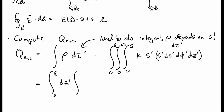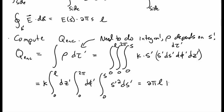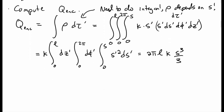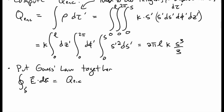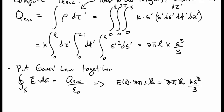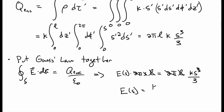These are three separate integrals — over z, over phi, and over s — with k out in front. The integrals are straightforward to do, giving us 2πLks³/3 for the charge enclosed. Now we put Gauss's law together: the flux must equal charge enclosed over epsilon-naught. So E times 2πsL equals 2πLks³/3. The 2π's and L's cancel, some factors of s cancel, and we're left with the electric field equal to k/(3ε₀) times s².